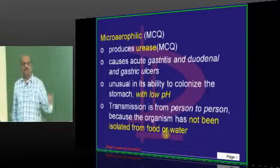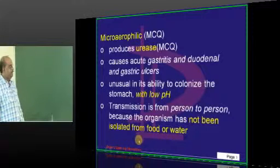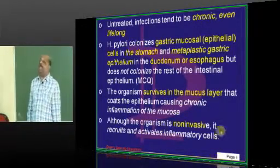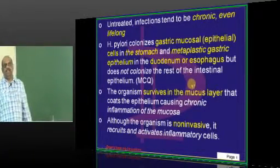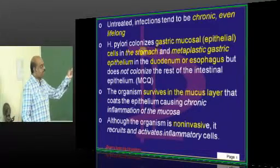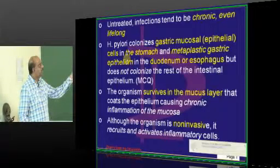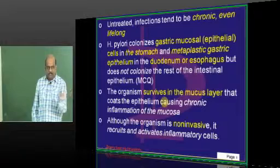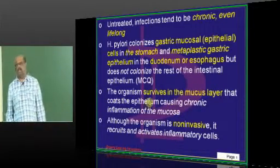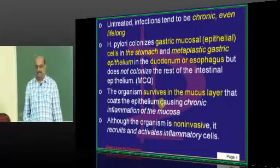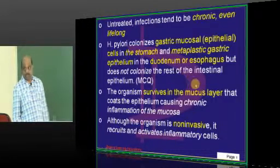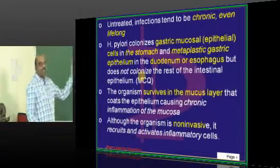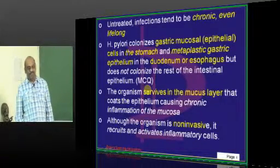Transmission is person-to-person, not through food or water, since it is not isolated in food or water. Without proper treatment, lifelong infection persists. It loves to stay in mucosal epithelial cells of the stomach and also in metaplastic gastric epithelium in the duodenum — where continuous acidic injury causes conversion to metaplastic epithelium. It can also live in the esophagus where acid reflux leads to metaplastic esophageal epithelium. However, it cannot live in the intestine.